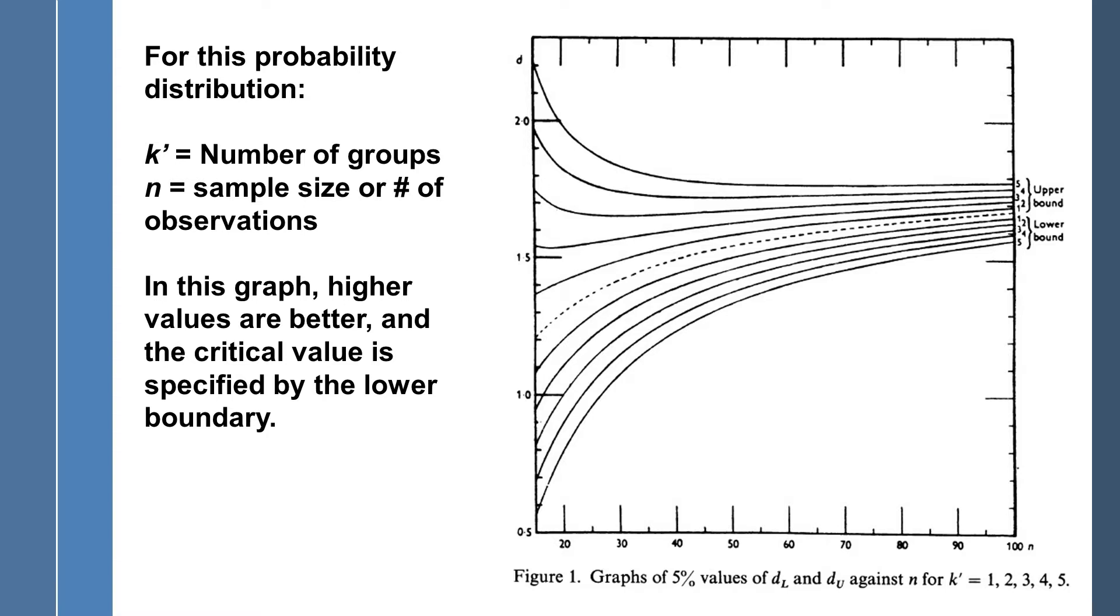What they proposed is a probability distribution, and this is the original graphic that went in the article. So, K-prime is the number of groups, N is the sample size or number of observations, and higher scores are better. I won't go into the calculation of the actual score, but we're just going to interpret the graph here.